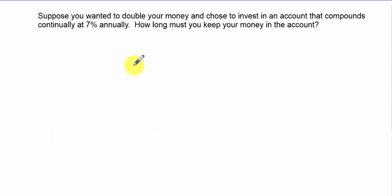The next problem: let's say you want to double your money and you choose to invest in an account that compounds continually, so that's Pe^(rt), at seven percent. How long do you have to keep the money in your account? In this case, you don't know how much you start with, you only know you finish with twice the amount. So we're going to put 2x here and this is e to the 0.07t power. You'll note that the x's go away.